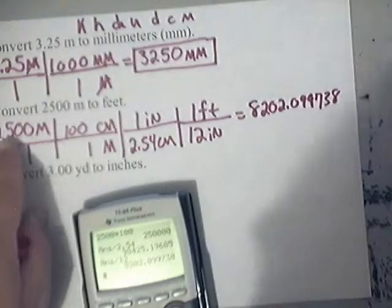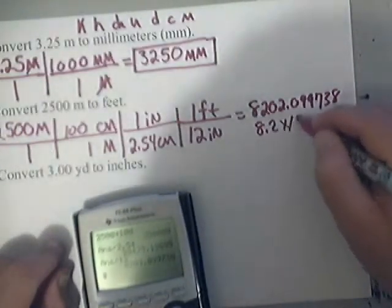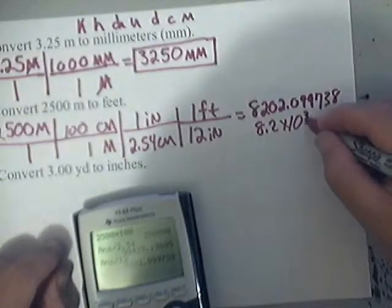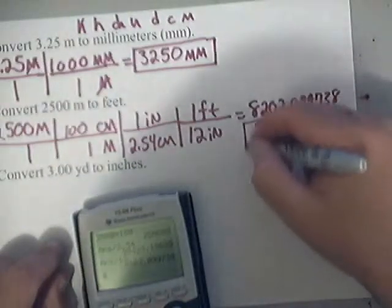Now, I only need 2 sig figs, so I'm just going to write down 8.2 times 10 to the 1, 2, 3, to the third power. And that would be in feet, and that would be my final answer.